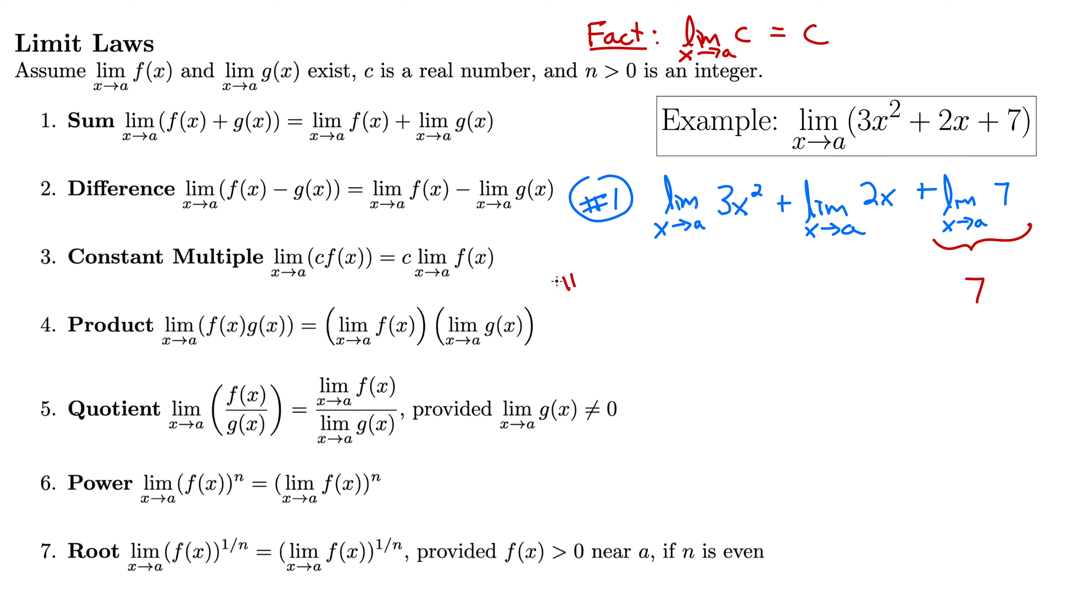So number 3 gives us 3 times the limit as x goes to a of x² plus 2 times the limit as x goes to a of x plus 7. Well, now we have a power in this first expression here. We have x². So we can use number 6, the power limit law, to work on that one. So now by number 6, we have 3 times the quantity limit as x goes to a of x all squared plus 2 times the limit as x goes to a of x plus 7.